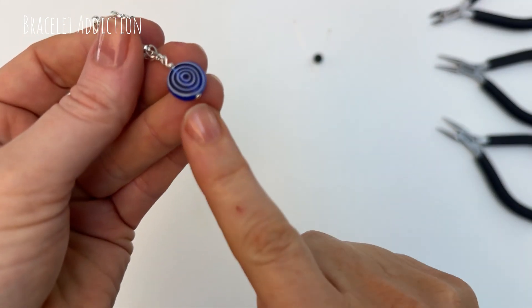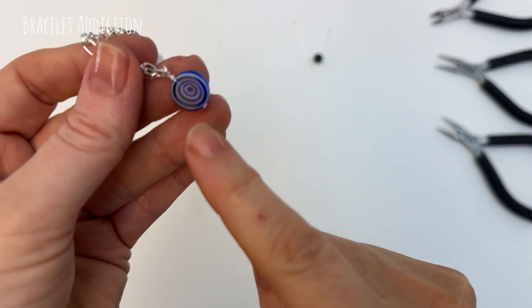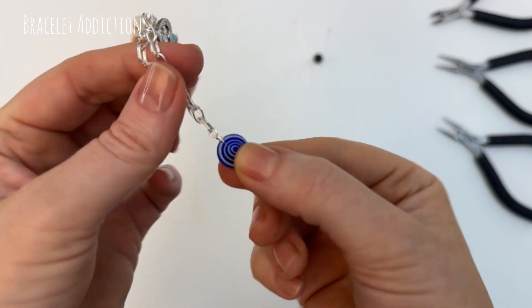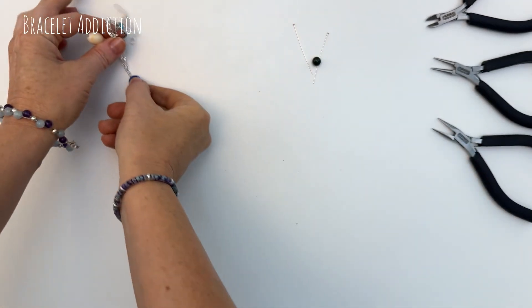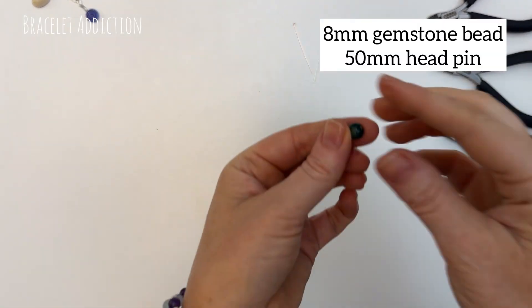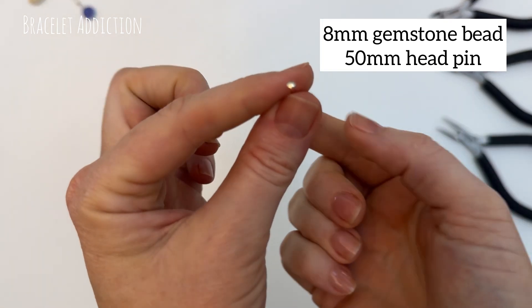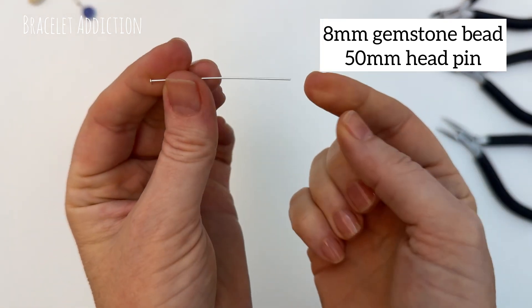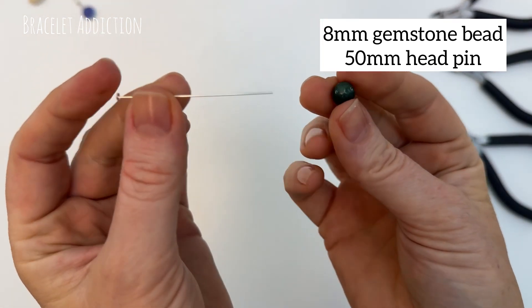This technique uses a head pin which has a small round piece of metal on one end and we make a loop to attach our charm on the other end. So for our charm we're using an 8mm bead and a head pin which is about 50mm long.